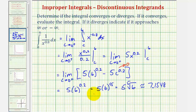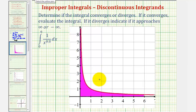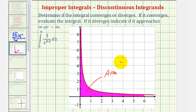Now that we've determined this definite integral is equal to five times the fifth root of six, we also know it converges. And if we go back to the graph, because the function is non-negative on this interval, we've determined that the area of this unbounded region on the interval from zero to six is equal to five times the fifth root of six square units.